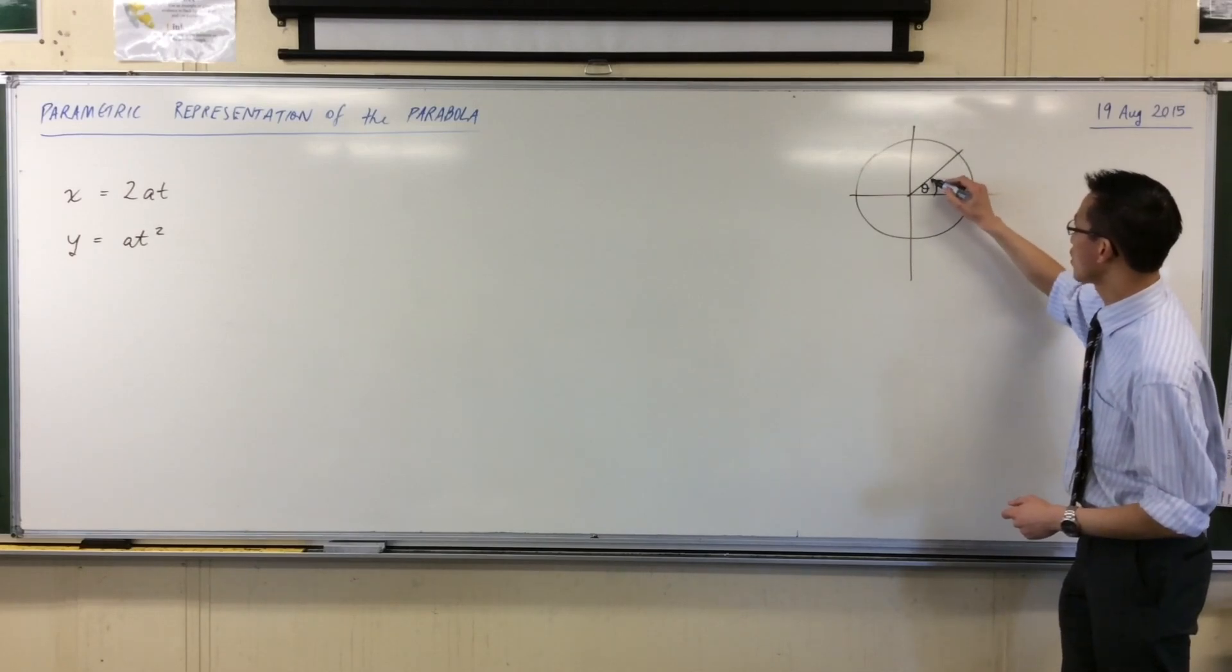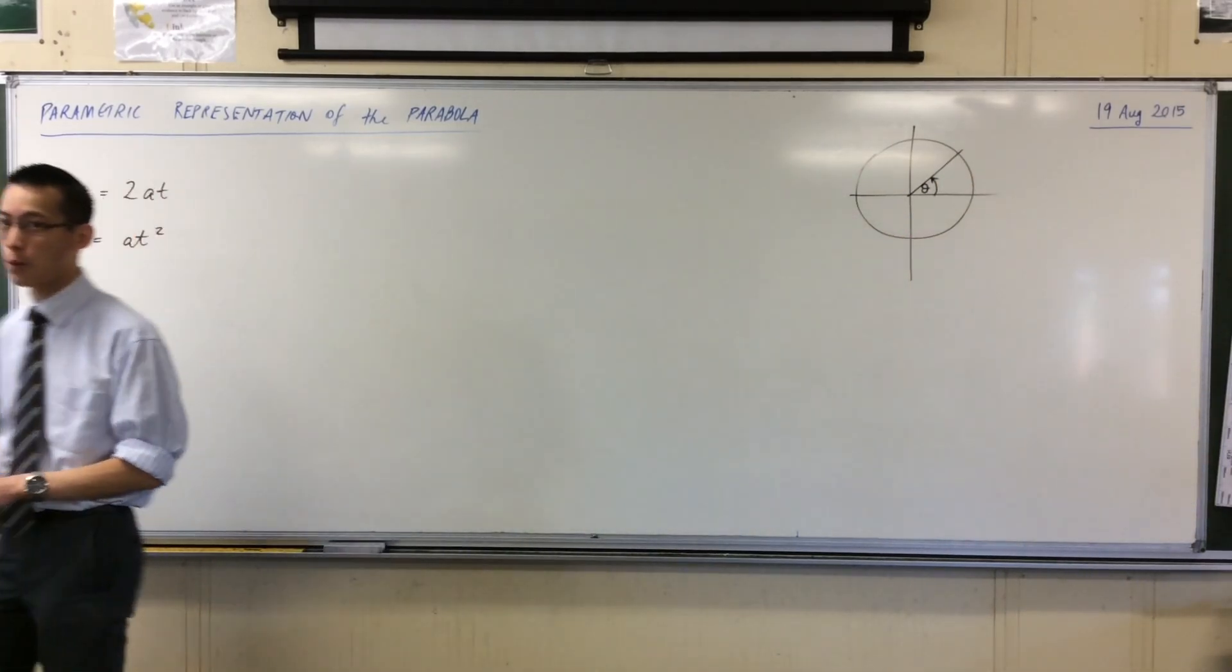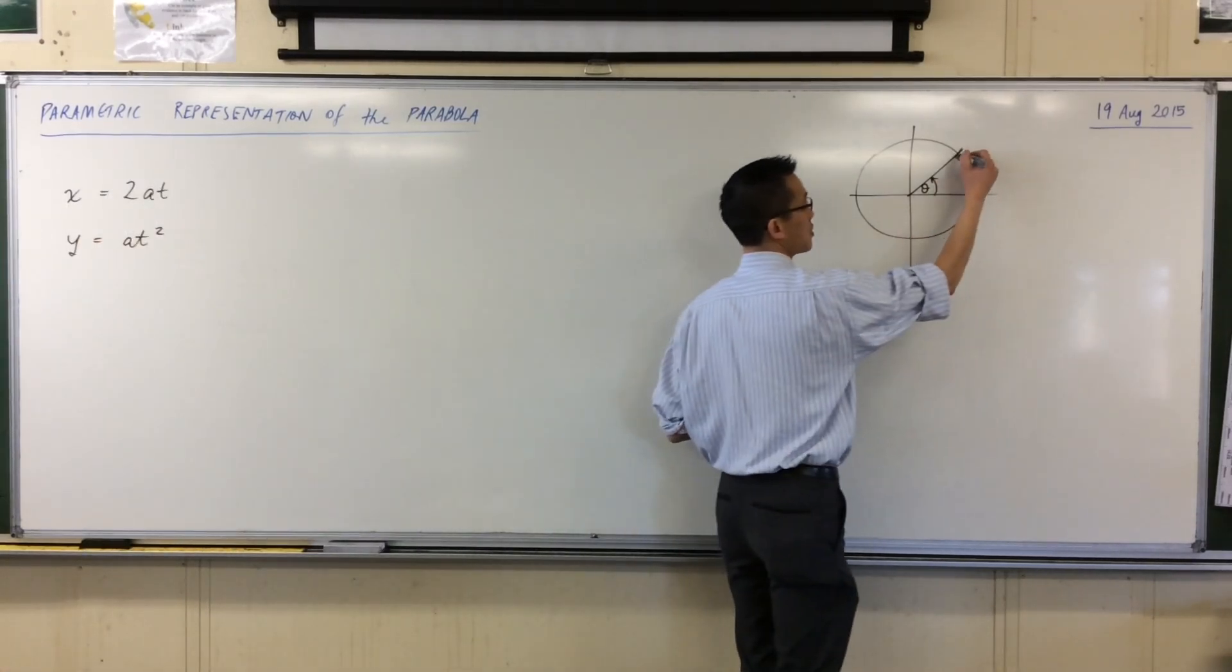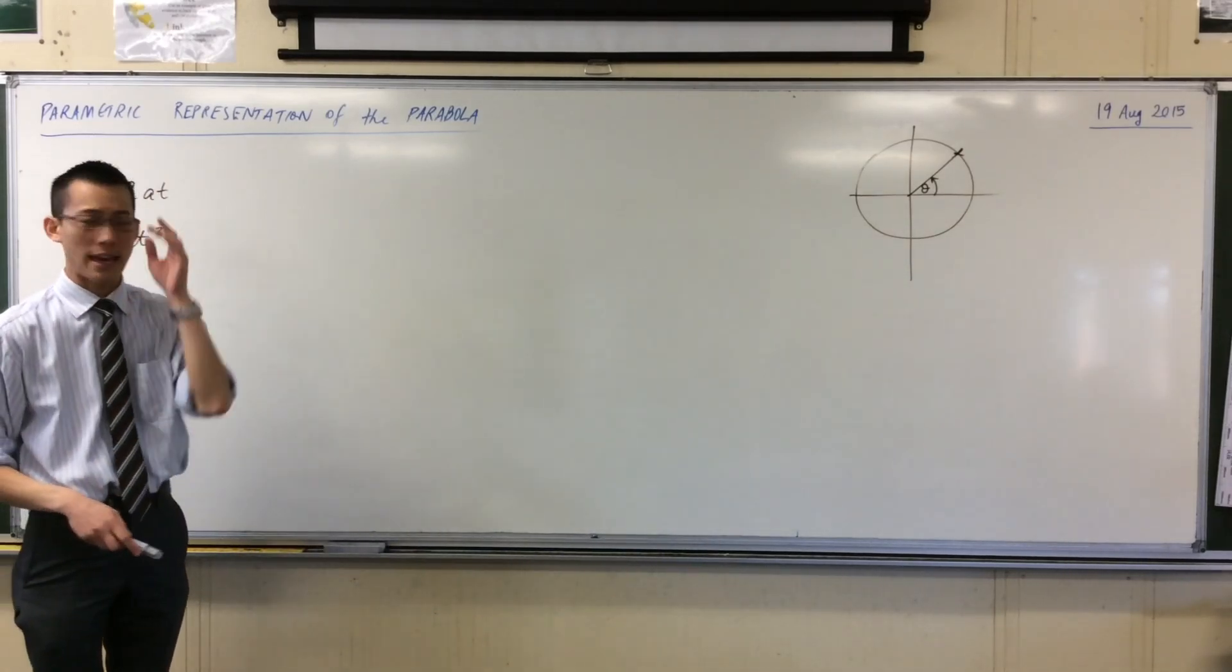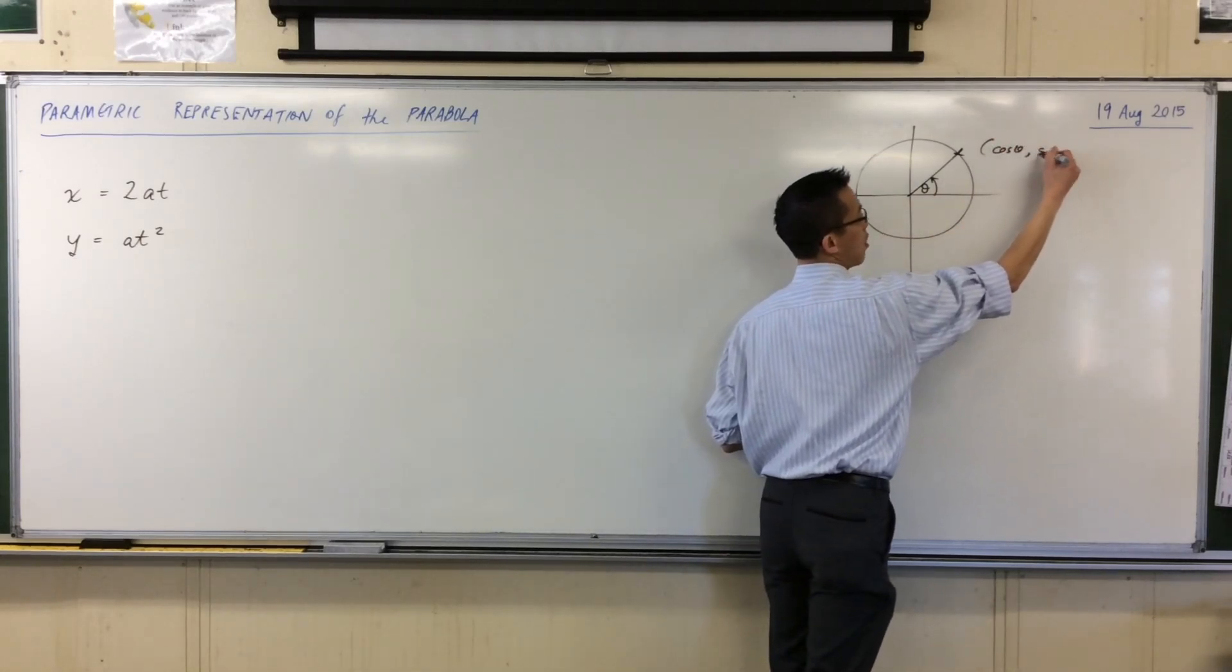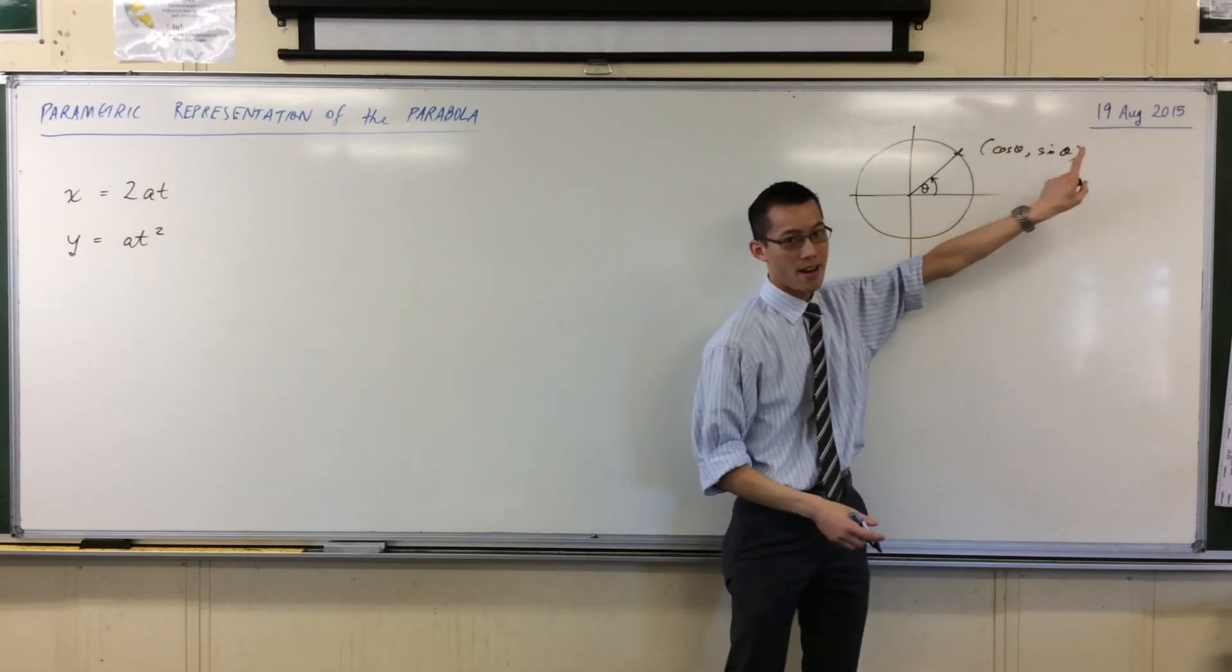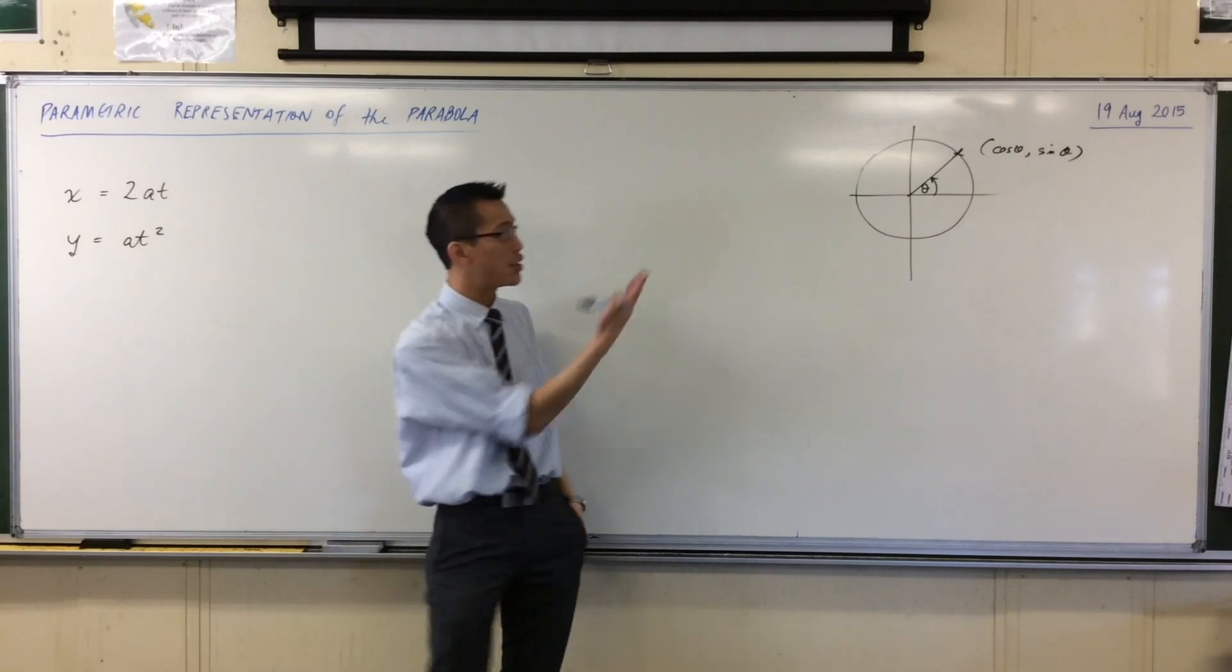The parameter that we tend to work with for the unit circle, and really any circle, is that angle formed at the origin between whatever line goes to a point on the circumference and the positive x-axis. That's the parameter, and that will define uniquely any point on the circle, given these parametric equations. x equals cos theta, y equals sine theta. That is the parametric representation of the unit circle.